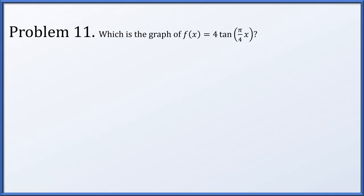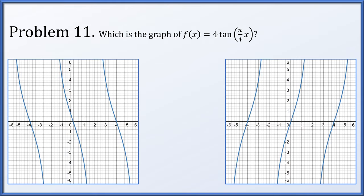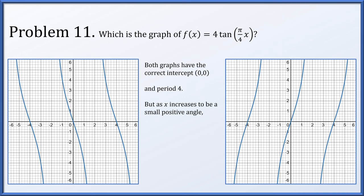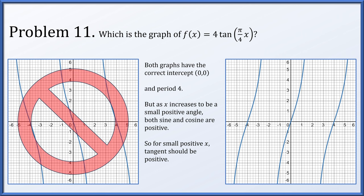Problem 11: What's the graph of f(x) = 4·tan(π/4·x)? We have two options. Both graphs have the correct intercept of (0, 0) and the correct period of 4. However, if x increases from 0 to a small positive angle, sine and cosine will both be positive, meaning tangent will be positive for small positive values of x. One graph shows the curve reaching negative values for slightly positive x — that's not what we expect. So it's not that one.